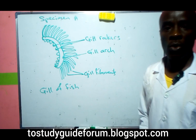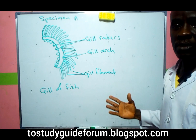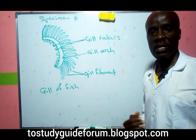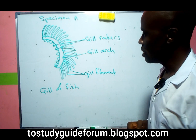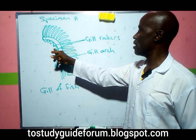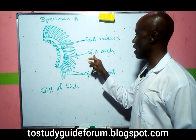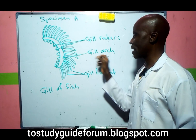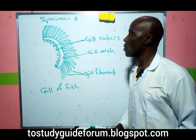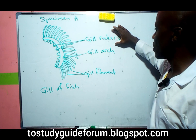Specimen A is a gill or fish gill. Looking at the basic things we can find in this specimen: we have the gill rakers, the gill arc, and the filaments.